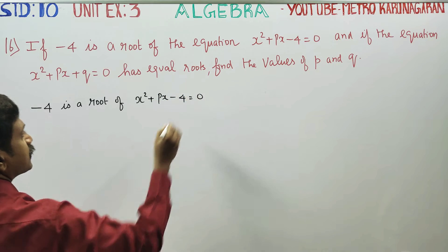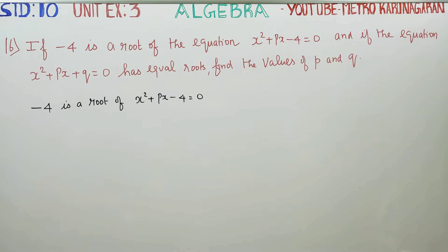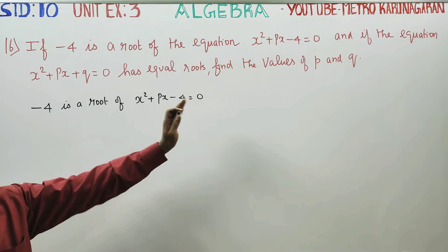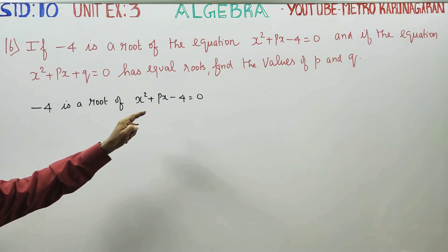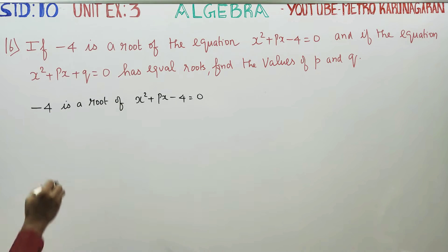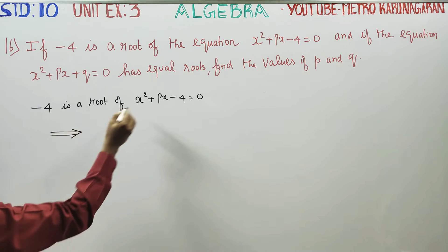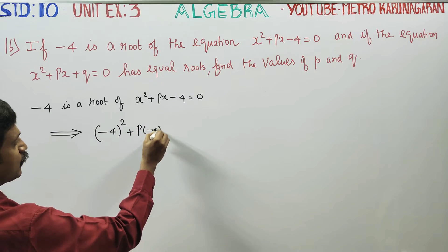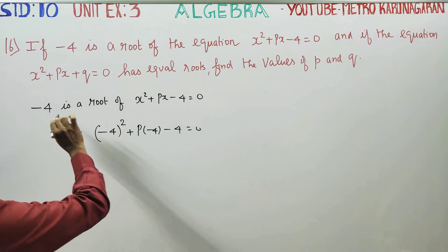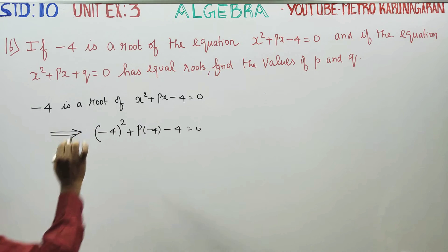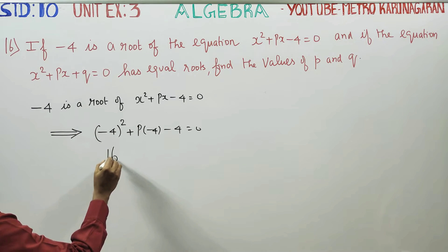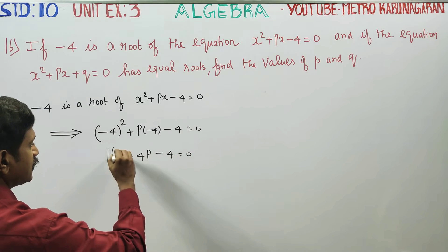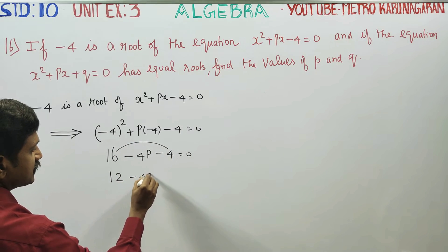Since minus 4 is a root, we substitute x equals minus 4 into the equation. Minus 4 squared is 16, plus p times minus 4, minus 4 is equal to 0. So we have 16 minus 4p minus 4 equals 0.